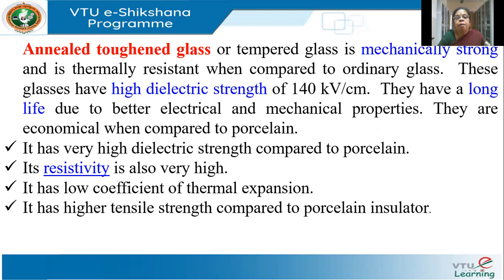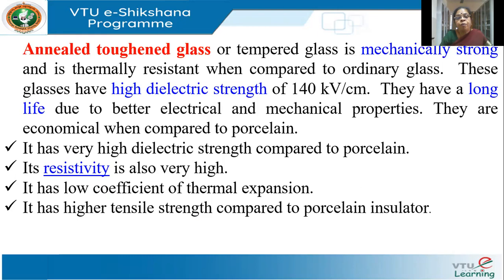The next material used is annealed toughened glass, or tempered glass. This is mechanically strong and thermally resistant compared to ordinary glass. There is a special processing method called annealing — a slow cooling of the material which hardens it. These glasses have a very high dielectric strength of around 140 kV per centimeter, a longer life, and compared to porcelain, they are cheaper. Their only problem is they are fragile.